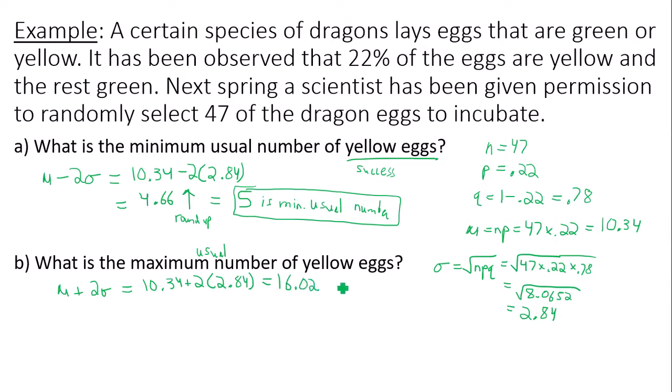And maximum number you always round down, regardless. If this was 16.75, I would still round down to 16. So 16 is maximum usual number. That being said, usual number of yellow eggs would be between 5 and 16. That's okay.